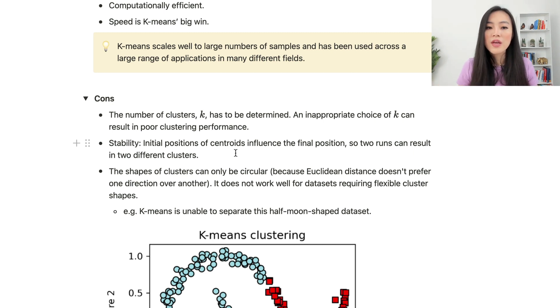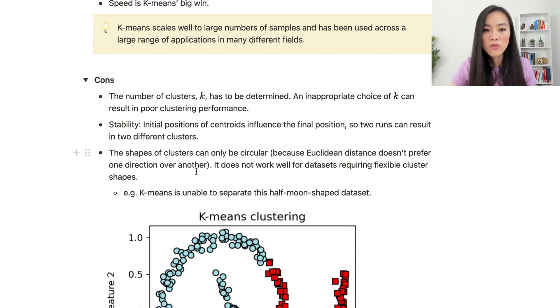Also, the shapes of clusters can only be circular. That's because the Euclidean distance doesn't prefer one direction over another, so it does not work well for datasets requiring flexible cluster shapes.